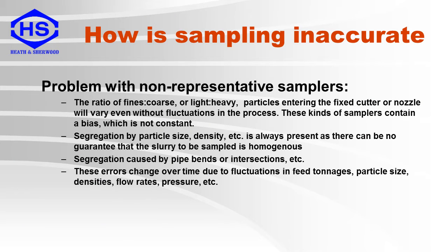Problems with non-representative samples arise because the ratio of fines to coarse or light to heavy particles entering a fixed cutter or nozzle will vary even without fluctuations in the process. These kinds of samplers contain a bias which is not constant. Segregation by particle size or density is always present and there is no guarantee that the slurry to be sampled is homogeneous. Segregation is caused by pipe ends or intersections before the sampler, and these errors change over time due to fluctuations in feed tonnages, particle size, densities, flow rates, pressures, and other factors.